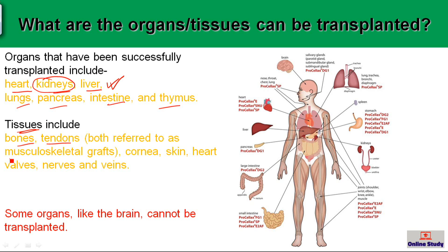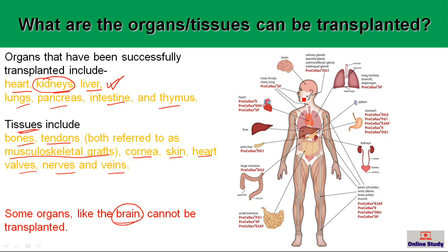Apart from organs, some tissues like bone and tendon — referred to as musculoskeletal grafts — can also be transplanted. Cornea, skin, heart valves, nerves, and veins can all be transplanted successfully, and in most cases they are retained in the recipient body by avoiding rejection. However, some organs like the brain still cannot be transplanted. If any doctor or scientist is ever able to transplant the brain, that day you could essentially change a human's identity from one to another, because the brain is the identity of a human.